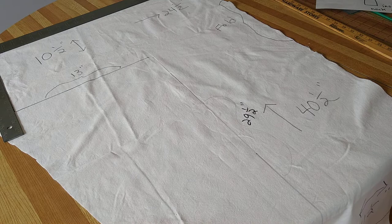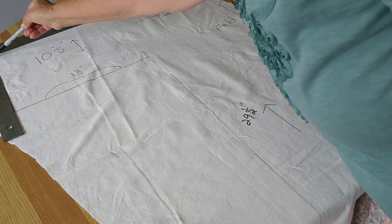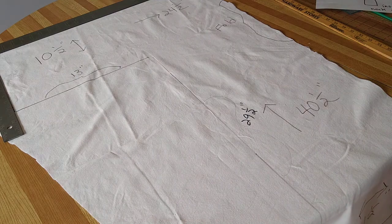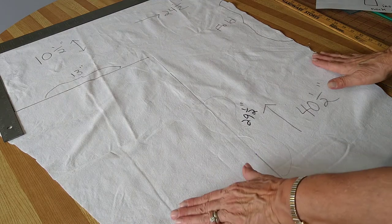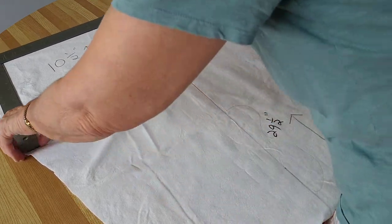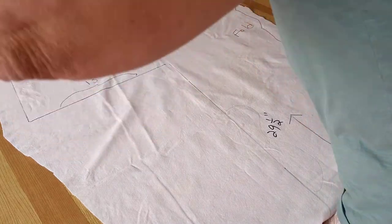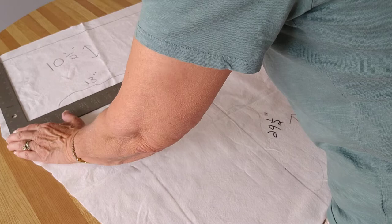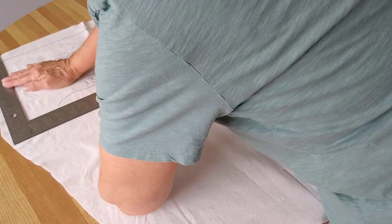Then you're going to draw a line ten and a half inches from the corner down. Once that's done, I'm going to turn it. Make sure it's along that line, nice and square.